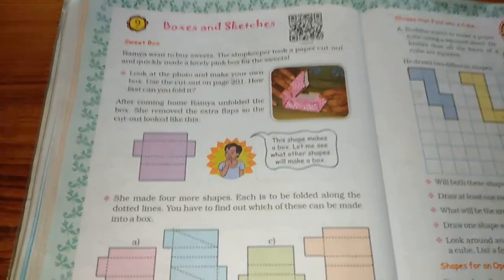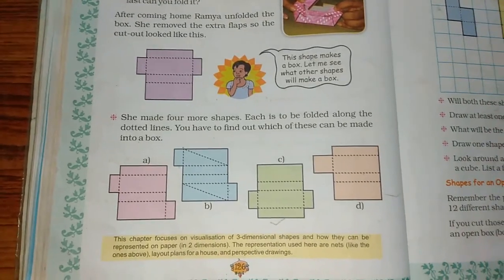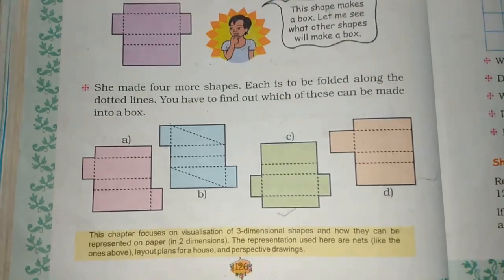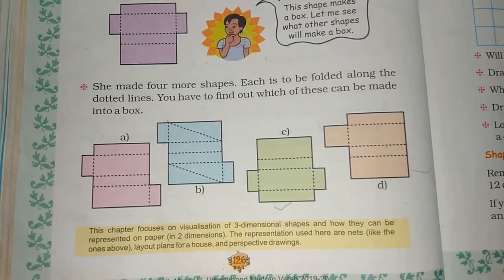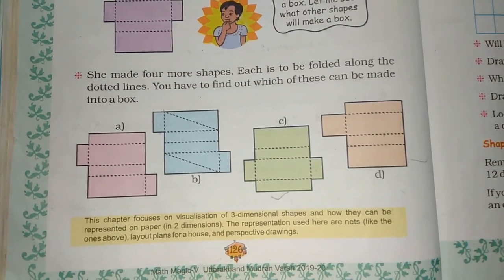Today we are going to study Boxes and Nets. In Boxes and Nets we have a problem. She made four more shapes, each is to be folded along the dotted lines. You have to find out which of these can be made into a box. Let's see, what did we have learned from this?